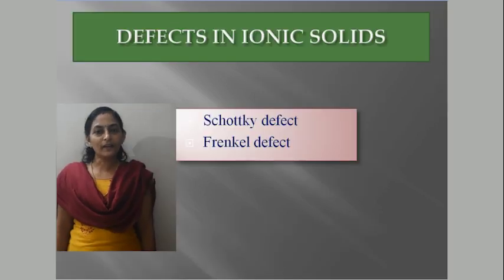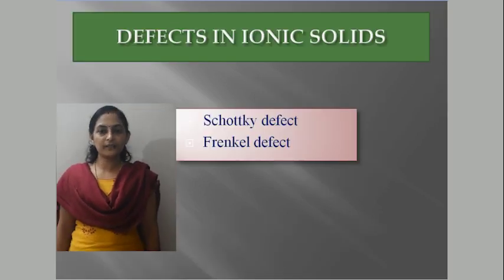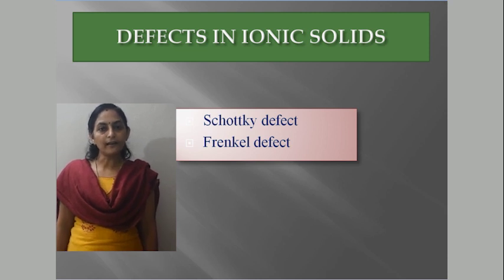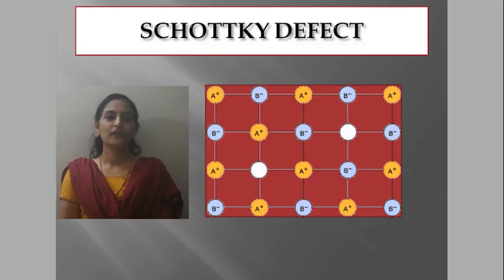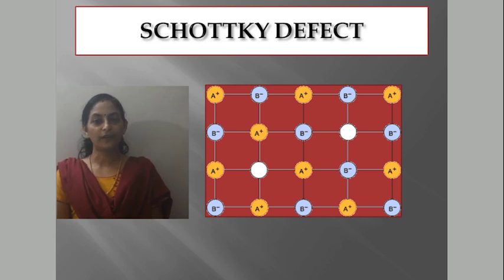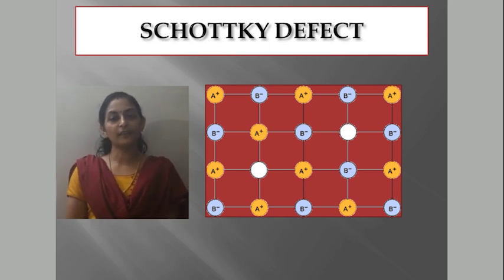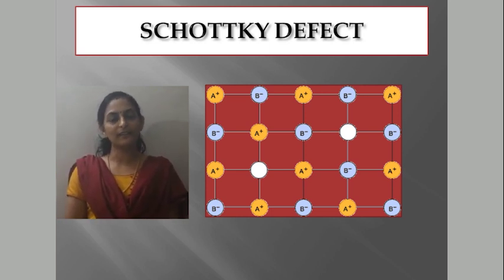For defects in ionic solids, there are two types: Schottky defect and Frenkel defect. The Schottky defect was discovered by a German scientist named Schottky.